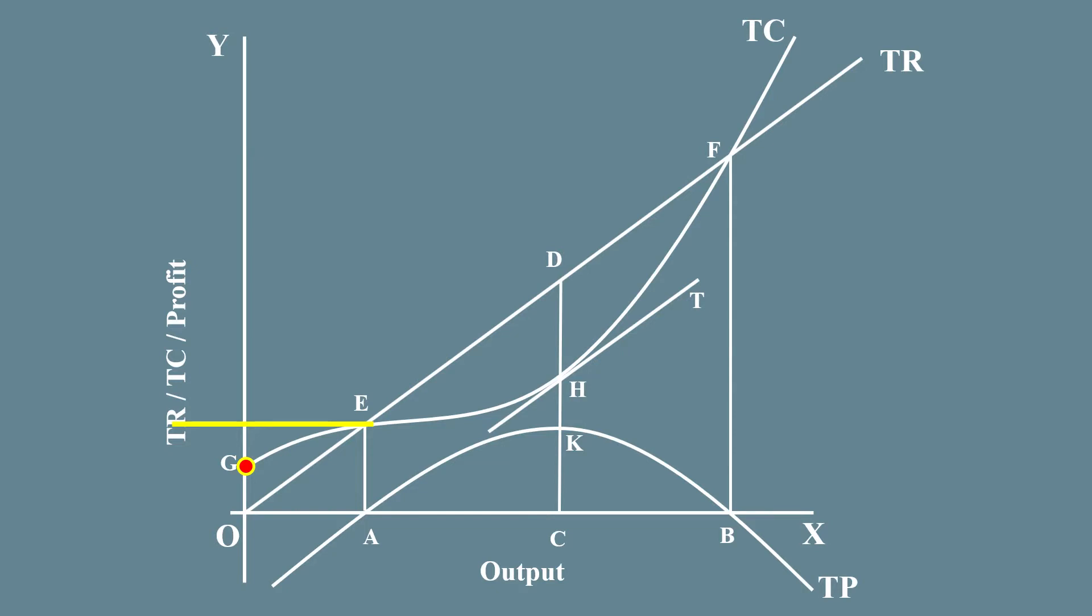The following points must find a place in your explanation. For outputs less than A, the profit is negative because in this range of output, total cost is greater than total revenue. For the same reason, beyond output B profit is negative. Exactly at outputs A and B, profit is zero because total cost is equal to total revenue.